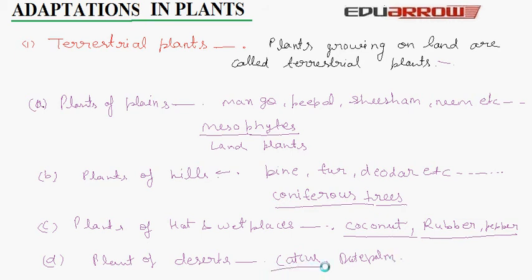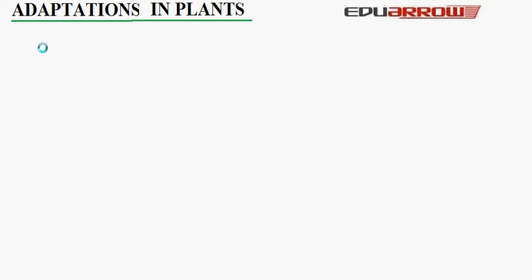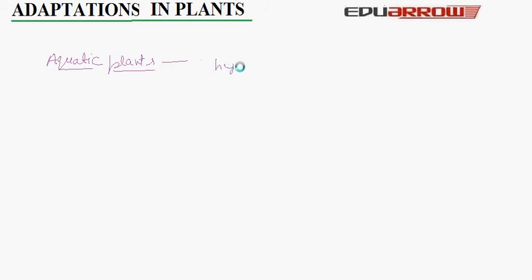Now we will discuss aquatic plants. Plants that grow in water are called aquatic plants. These plants are also called hydrophytes — hydro means water and phyte means plant, so hydrophytes means water plants. These types of plants can be divided into three groups.